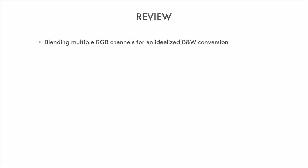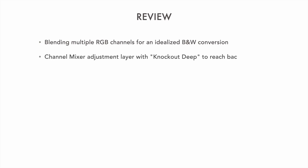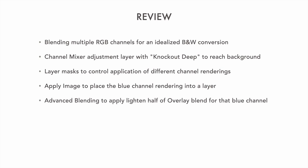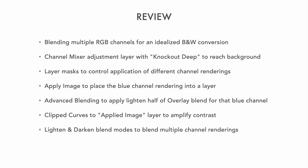To review: we saw how to blend multiple RGB channels to build an ideal black and white conversion. We used advanced blending options with knockout deep to reach down to the background and place the original unaltered channel into a channel mixer adjustment. We used layer masks to selectively blend different channel renderings, the apply image command to place channels into pixel layers, advanced blending options to selectively apply the lighten half of an overlay blend, clipped curves adjustments to amplify contrast, and lighten and darken blend modes to blend different channel renderings together.